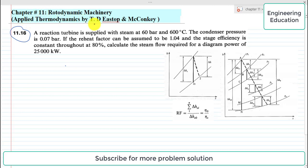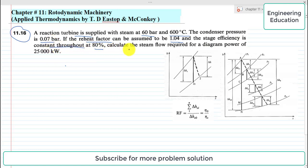From the book Applied Thermodynamics by Eastop and McConkey. The statement of the problem is: a reaction turbine is supplied with steam at 60 bar and 600 degrees centigrade. The condenser pressure is 0.07 bar. If the reheat factor can be assumed to be 1.04 and the stage efficiency is constant throughout at 80 percent, calculate the steam flow required for a diagram power of 25,000 kilowatt.